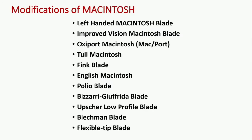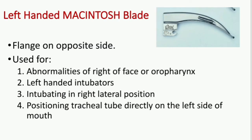There are many modifications of the Macintosh blade. The first is the left-handed Macintosh blade, where the flange is on the opposite side. It is mainly used for abnormalities of the right side of the face or oropharynx, is particularly useful for left-handed intubators, for intubating in the right lateral position, and for positioning the tracheal tube directly on the left side of the mouth.